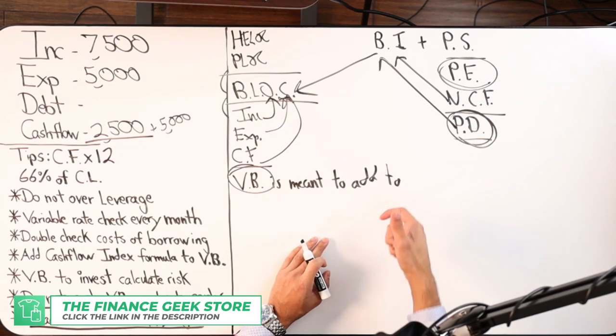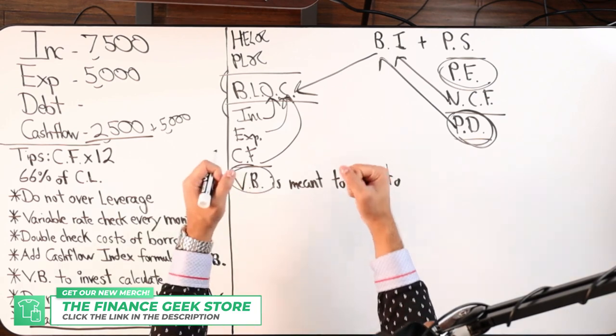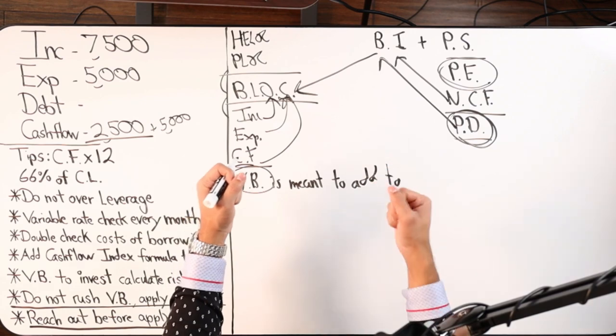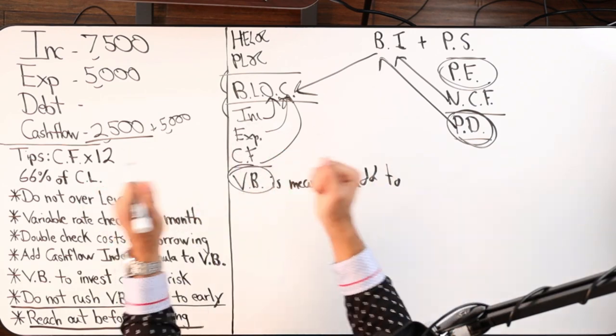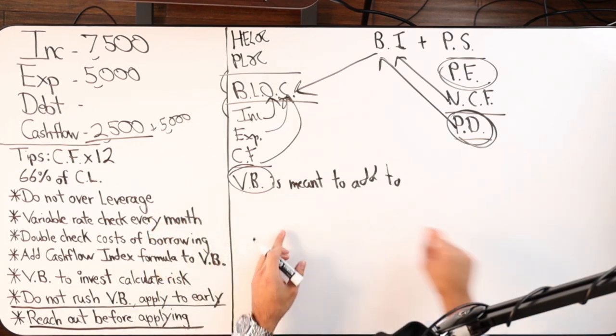But here's the issue: if you got nitrous in your vehicle and you have terrible steering and handling, what are you going to do when you hit that nitrous? Oh my god, you're going to spin out. Does that make sense?